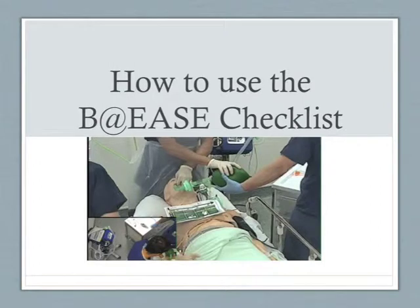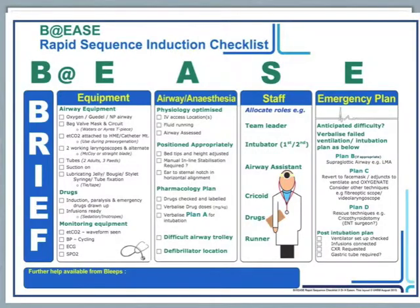This video is a brief overview of how to use the Be at Ease Rapid Sequence Induction Checklist. The Be at Ease Checklist is a two-sided document designed to make the process of carrying out an emergency rapid sequence induction safer by reducing error and improving the function of the team carrying out the procedure.